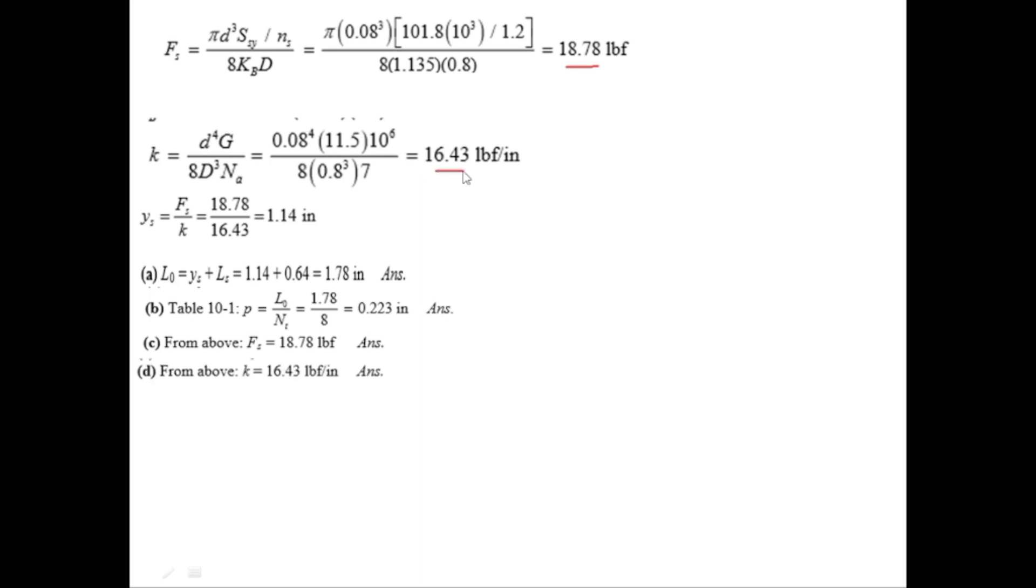Part E we were required to find out whether buckling would occur or not. To avoid buckling L0 should be less than L critical, and L critical is equal to 2.63 into mean coil diameter divided by alpha.